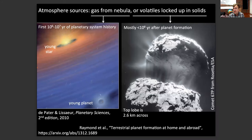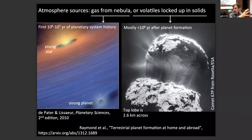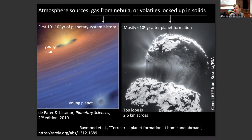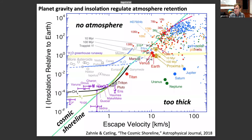Atmosphere sources include gas from the nebula and volatiles locked up in solids, released from asteroids or comets as they impact. Sometimes you have gas from the nebula dominating a planet's atmosphere — for example Jupiter — often called primary atmospheres. Sometimes you have planets with atmospheres whose gas mostly came from solid-derived volatiles — for example Earth — and those are often called secondary atmospheres. The terminology is mostly historical but widely used enough that it's worth knowing.